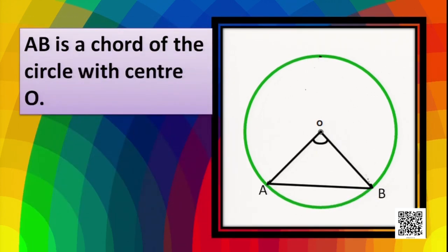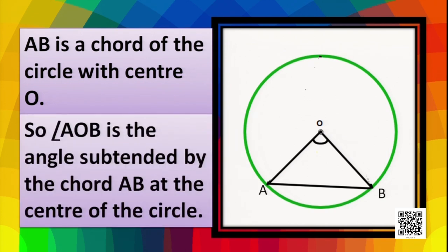Now again AB is a chord and the center of the circle is O. Here you can see that AB also subtends an angle at O. So we can say that angle AOB is the angle subtended by the chord AB at the center of the circle.